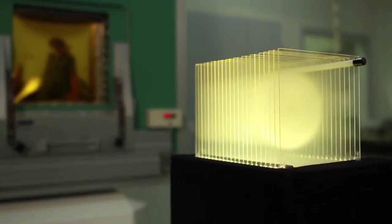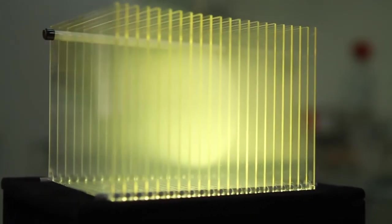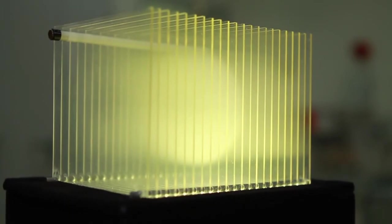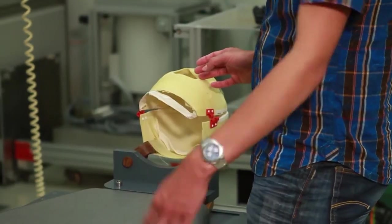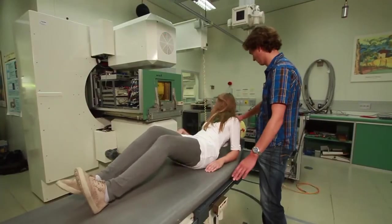To reach all the cells, the biophysicists measure the tumor exactly and divide it into layers digitally. The ion beam can be positioned with millimeter accuracy and can thus be driven through the layers point by point, destroying the tumor cells along the way. A mask is used to prevent the patient from moving so that the ion beam does not hit spots outside of the tumor area.